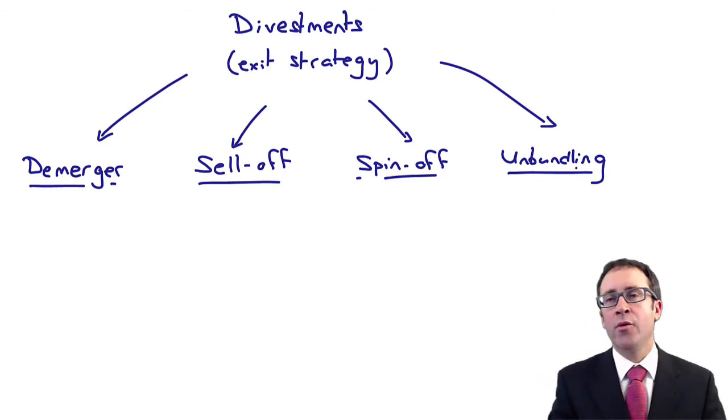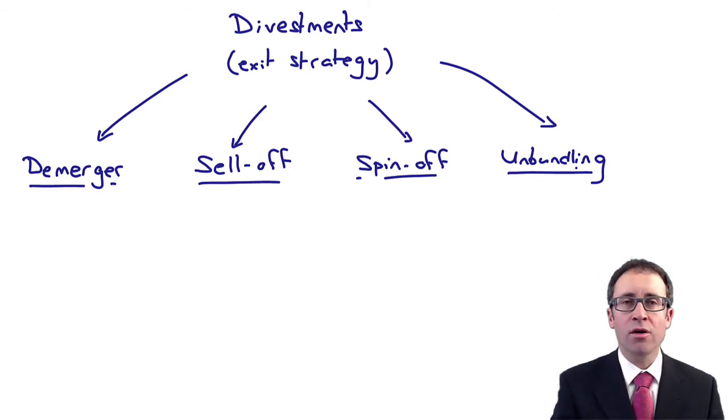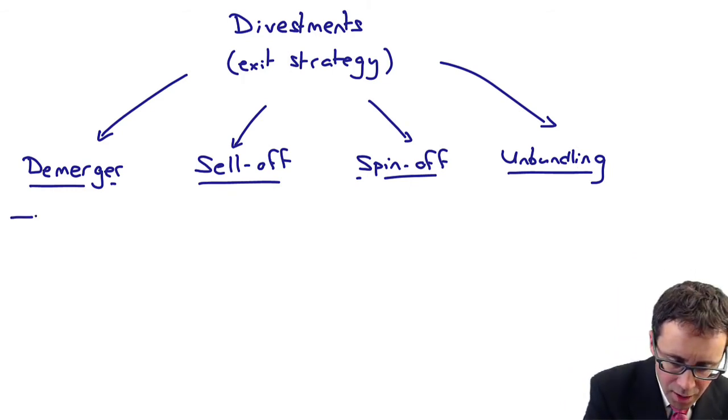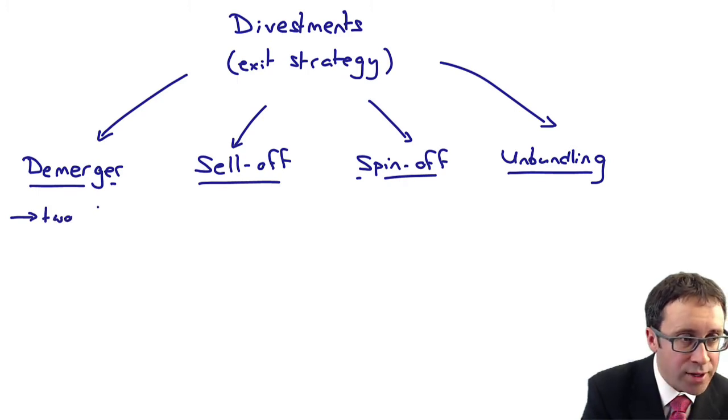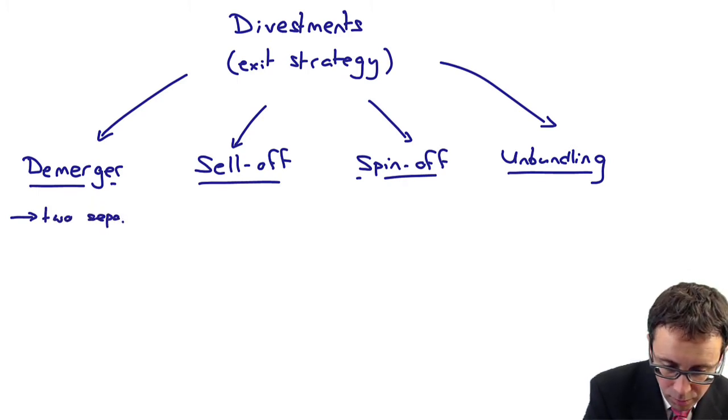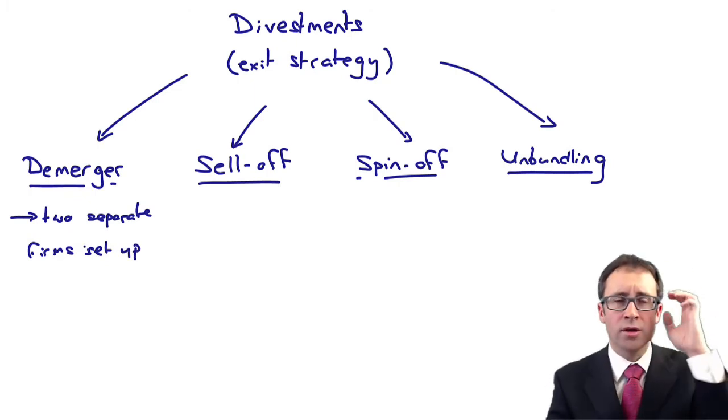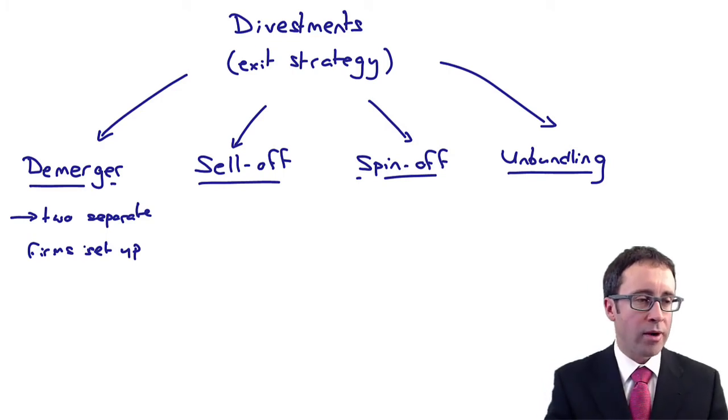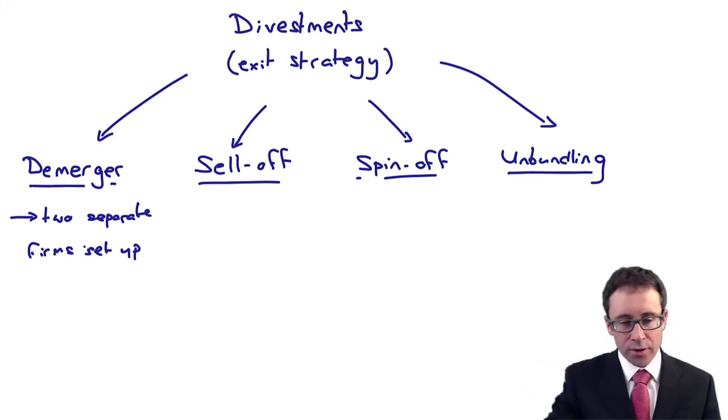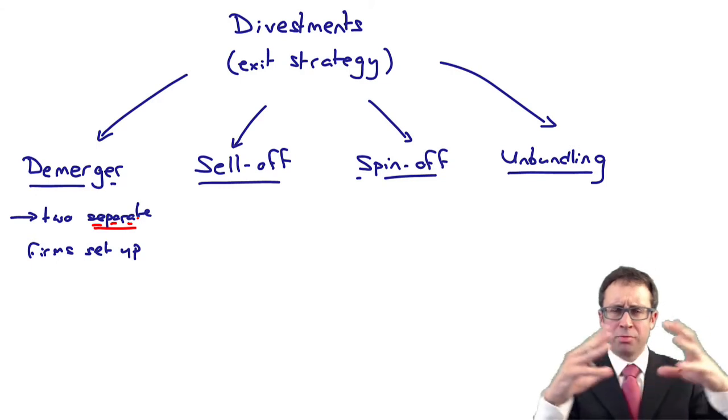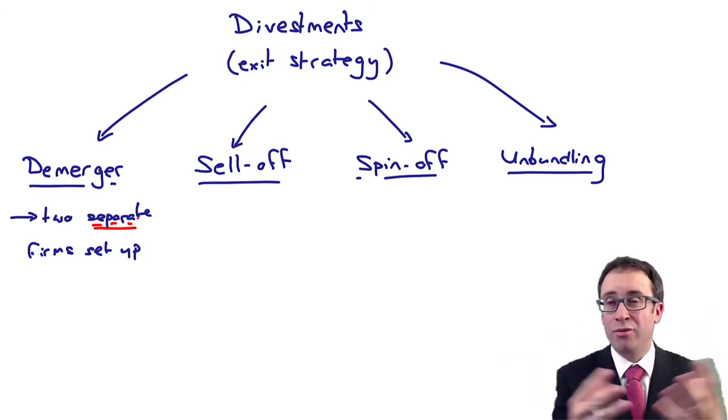You just need to know what each type of divestment strategy involves. First, a demerger. With a demerger, what happens is that as a result, you have two separate firms that are then set up. The business has got so big, you want to focus on your core operations. You take your large conglomerate and split it out into two separate new businesses.